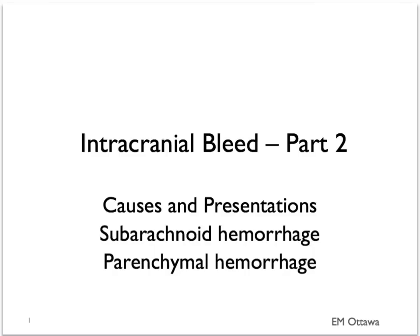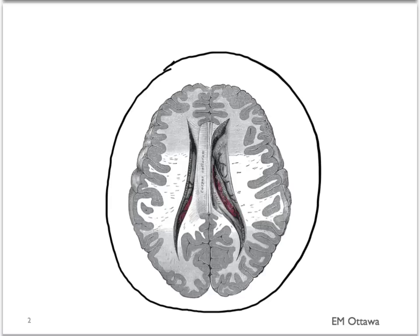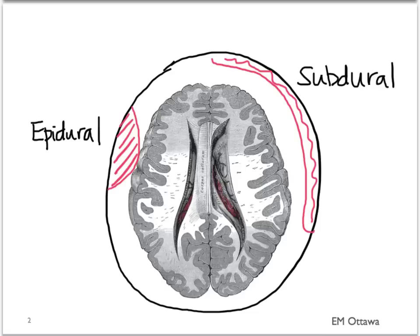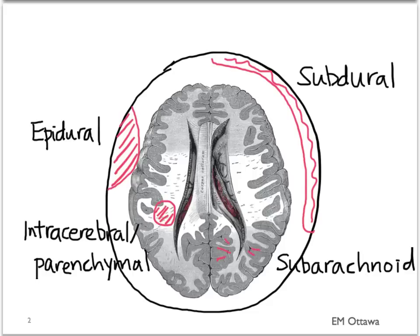Welcome back to intracranial bleed part 2. In this section, we will discuss subarachnoid hemorrhage and parenchymal hemorrhage, and their presentations. As we talked about before, there are four types of intracranial bleed: epidural, subdural, subarachnoid bleed, and intracerebral or parenchymal bleeds.